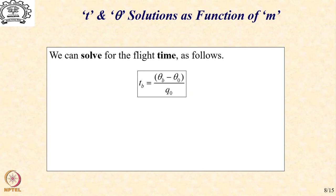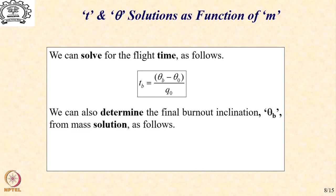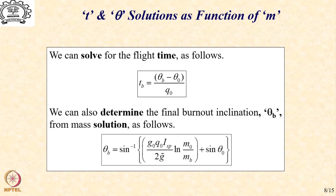If we are given the starting and terminal condition along with q0, we can directly get the solution for flight time — that is, how long the mission will last. On the other hand, if we are given the mass and initial condition, it is possible to determine the terminal inclination through the mass profile specification. If we know the burnout mass and liftoff mass (the mass fraction), the initial angle, and the pitch rate, we can directly calculate the terminal angle through this trigonometric expression.